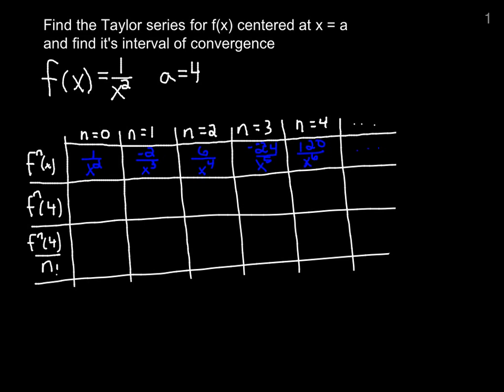We need to evaluate each one of these at 4, but instead of simplifying, we'll leave it as 4, replacing the x and keep the exponent. So 1 over 4 squared, negative 2 over 4 cubed, positive 6 over 4 to the 4, negative 24 over 4 to the 5th, and positive 120 over 4 to the 6th, and we will continue.